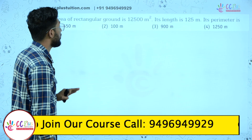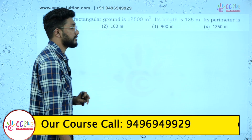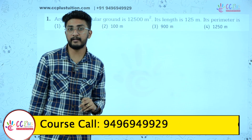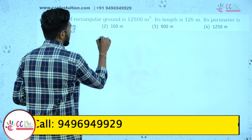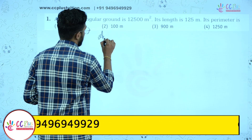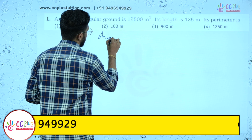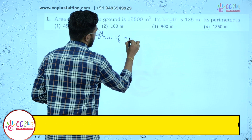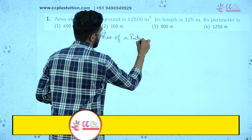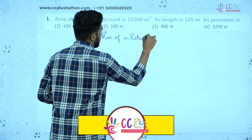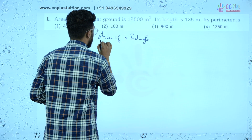Area of a rectangle — what is the formula? Area of a rectangle. Area equals length into breadth.